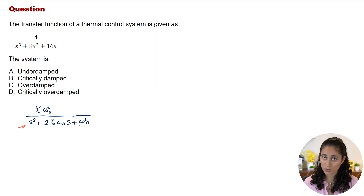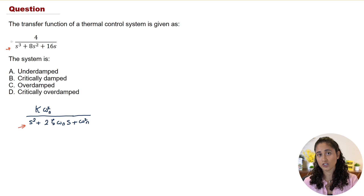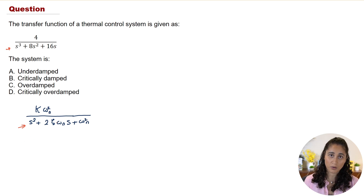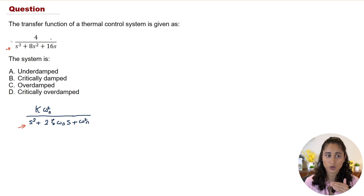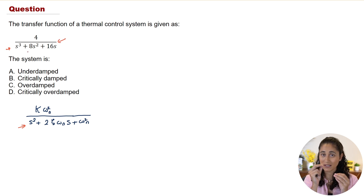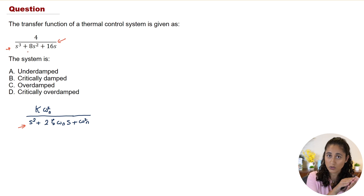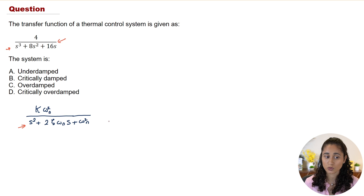Note that we have a second-degree equation from the reference, but our given equation is third degree. We need to convert our equation into a second-degree equation so we can compare terms and determine the damping ratio. As mentioned, this is the transfer function multiplied by the step input 1/s, so we can factor out 1/s and then compare the transfer function to the reference equation.